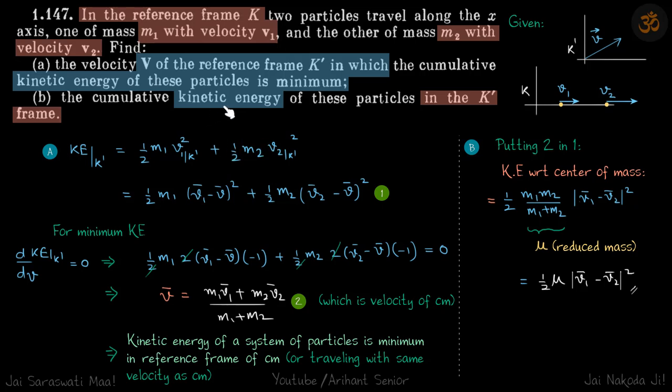Now in the second case, kinetic energy: whatever velocity we have found we will substitute here. When you do that, you will see that kinetic energy with respect to center of mass comes to be half m1 m2 divided by m1 plus m2 times v1 vector minus v2 vector whole squared.